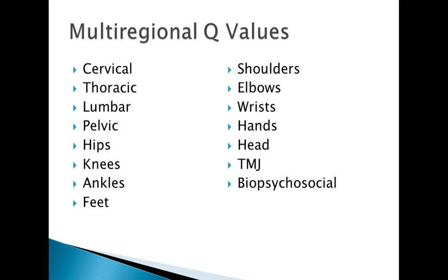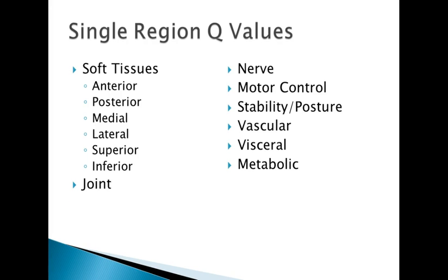Here is a list of the different regions available for multi-regional Q-Values. There can be multiple regions selected for each Q-Value, and there can be more than one multi-regional Q-Value for each test. Here is a list of the different tissues and systems available for defining a regional Q-Value. We will often have multiple systems involved in a single test.